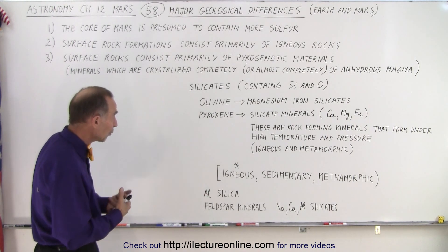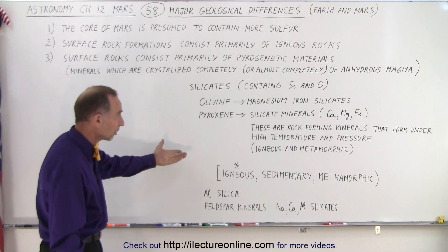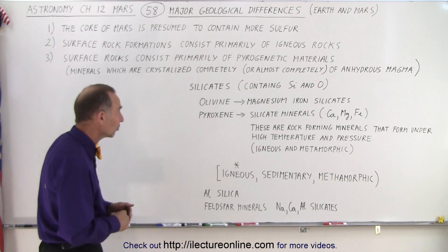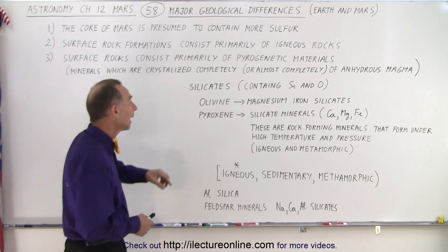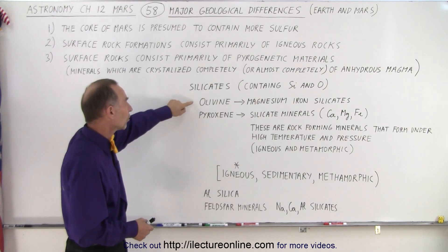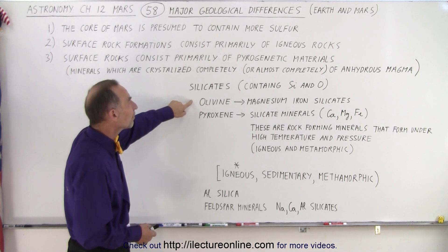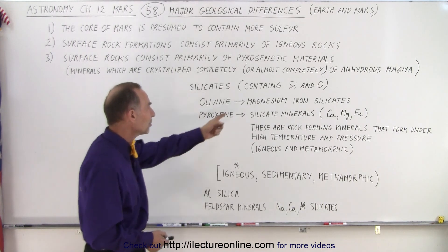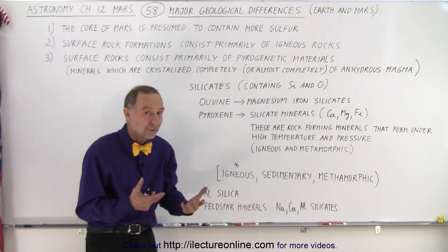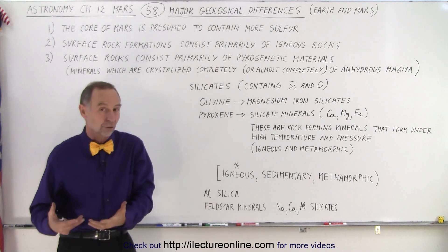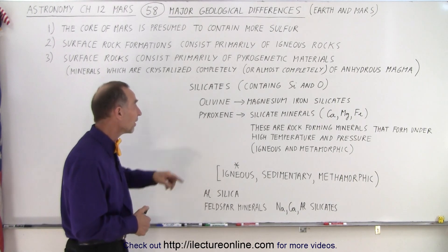So we do find a lot of silicate, just like on Earth, which contain silicon and oxygen — the primary constituent of sand and rock. And the minerals we find in abundance are olivine and pyroxene. Olivine is primarily made from magnesium iron silicates, and of course there's a lot of magnesium and iron on the surface of Mars, so it would make sense that we would find a lot of olivine.